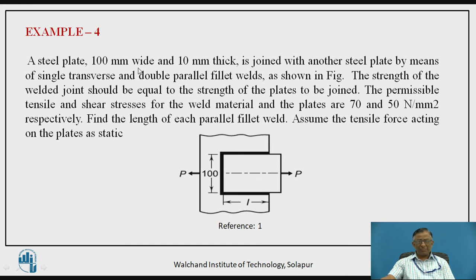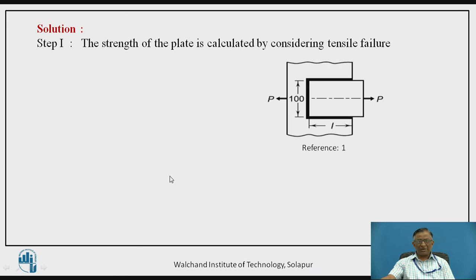Consider another example where a 100 mm wide and 10 mm thick plate is welded to another steel plate by two parallel fillet welds and a single transverse fillet weld — that is, double parallel fillet weld and a single transverse fillet weld. The permissible tensile and shear stresses for the weld material and the plate are 70 N/mm² and 50 N/mm² respectively. Find the length of each parallel fillet weld, assuming the tensile force acting on the plate is static. The strength of the plate and the strength of the joint must be equal.